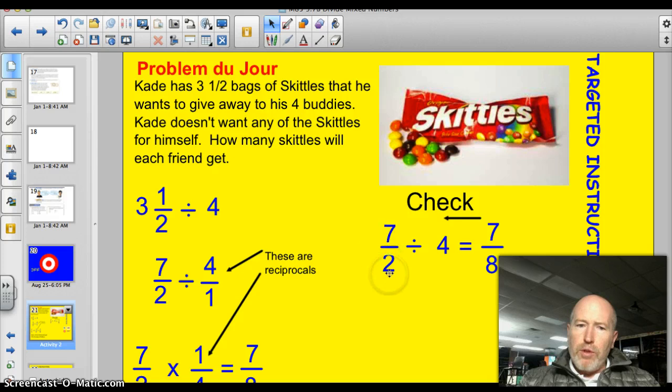The problem du jour. Remember, Cade has 3½ bags of Skittles that he wants to give away to his four buddies. Cade doesn't want any of the Skittles for himself. How many Skittles will each friend get? So, he's got the 3½ and he's going to divide it by 4. Well, this is a little different because now we have a mixed number we're working with. But, it's really pretty simple.